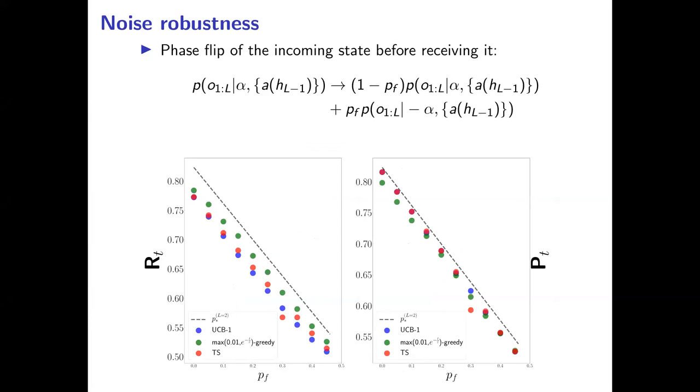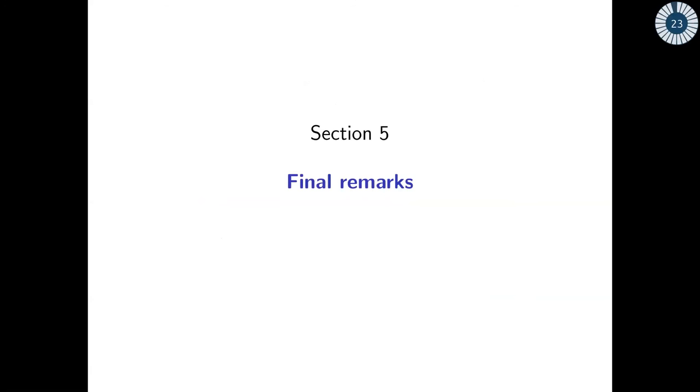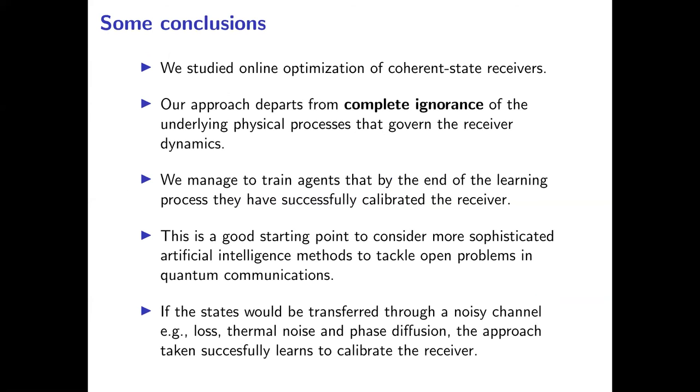Then we moved and explored phase flip of the incoming state. Even if the state is, say, plus before arriving to the photodetector, it flips its sign and its minus. Then the agent, even if guessing for plus, it gets a reward of zero. And it happens the same. Of course, this is a definite number of measurements. With this, I would like to conclude my talk and summarize it a bit.